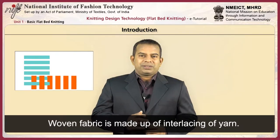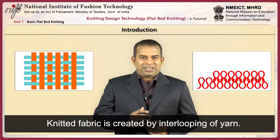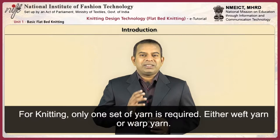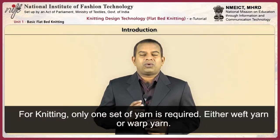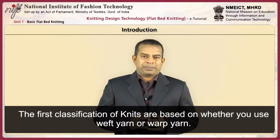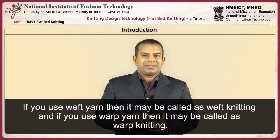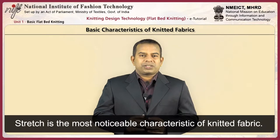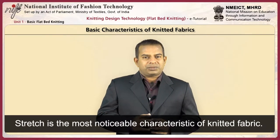Woven fabric is made up of interlacing of yarn. Knitted fabric is created by inter-looping of yarn. Weaving requires two sets of yarn, namely warp and weft. For knitting, only one set of yarn is required, either weft or warp. The first classification of knits is based on whether you use weft yarn or warp yarn — weft knitting or warp knitting. Stretch is the most noticeable characteristic of knitted fabric.